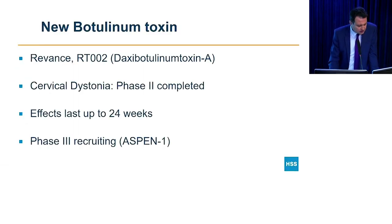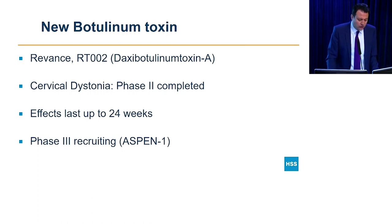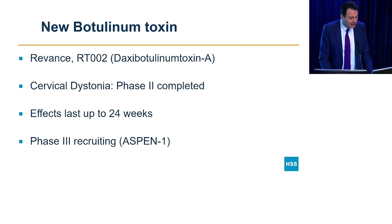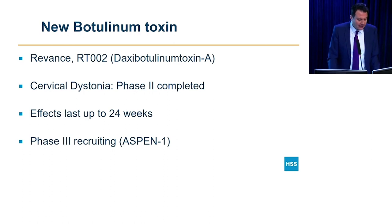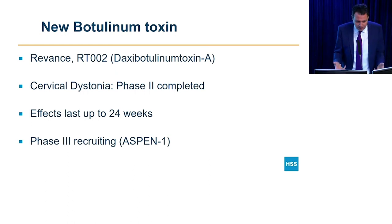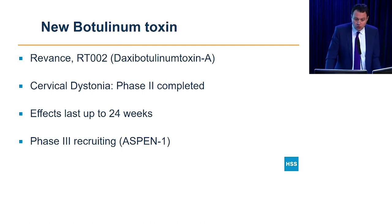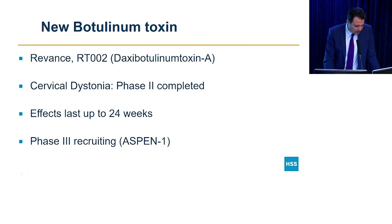Starting with ongoing clinical trials in dystonia: Revance is developing a longer-acting botulinum toxin called daxibotulinum toxin A (type A). Phase two is completed and showed the effect lasting up to 24 weeks — six months, twice as long as standard botulinum toxin. They are now recruiting for phase three trials called ASPEN-1; interested patients can look into that on clinical trial registries.